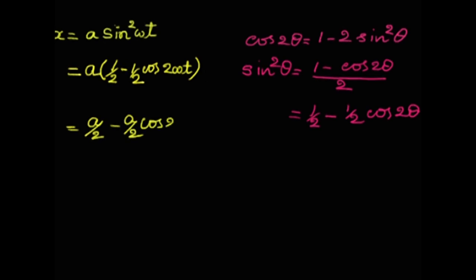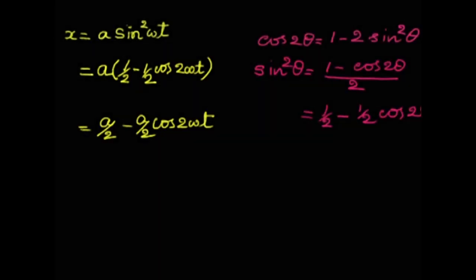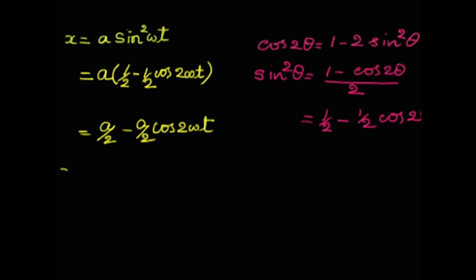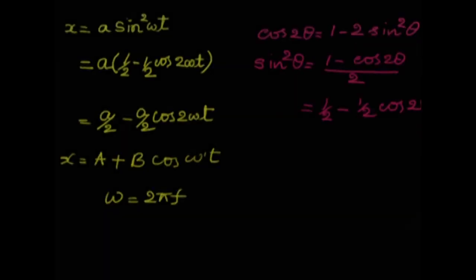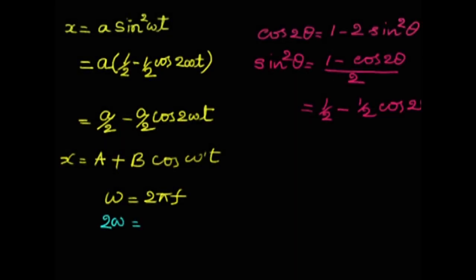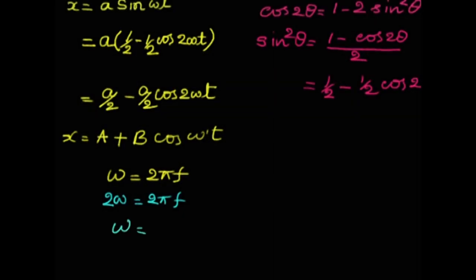The standard SHM equation is x = A + B cos(ω′t). Comparing, the angular frequency ω′ = 2ω. Since ω = 2πf, we have 2ω = 2πf, giving ω = πf, so f = ω/π. This is SHM of frequency ω/π, and the motion is indeed simple harmonic.